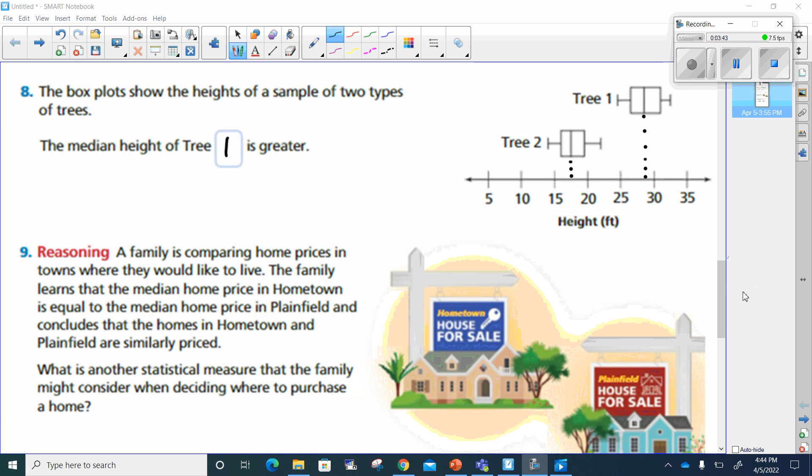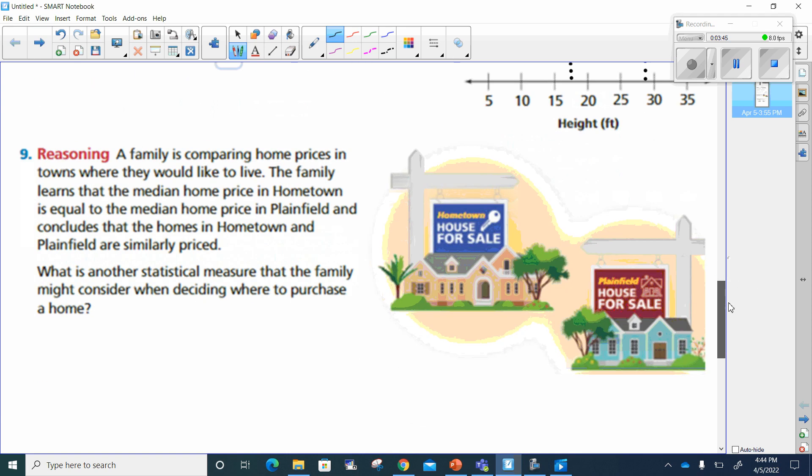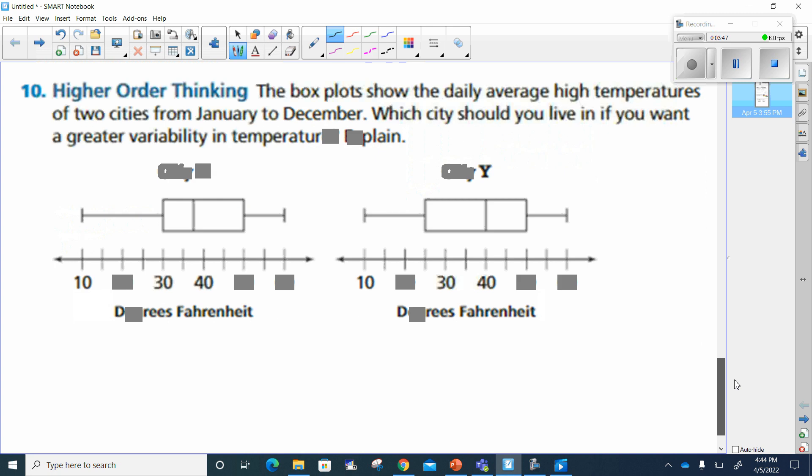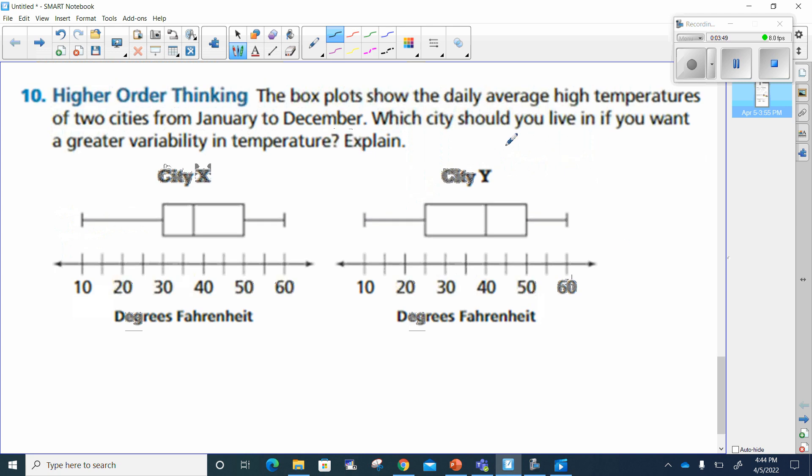Alright, number nine is yours to do, which means I have number 10, higher-order thinking question. The box plot shows the daily average high temperature of two cities from January to December, city X and city Y. Which city should you live in if you want a greater variability in temperature?